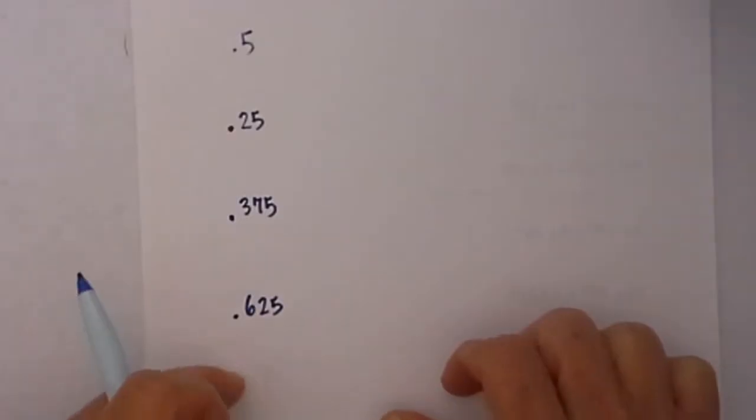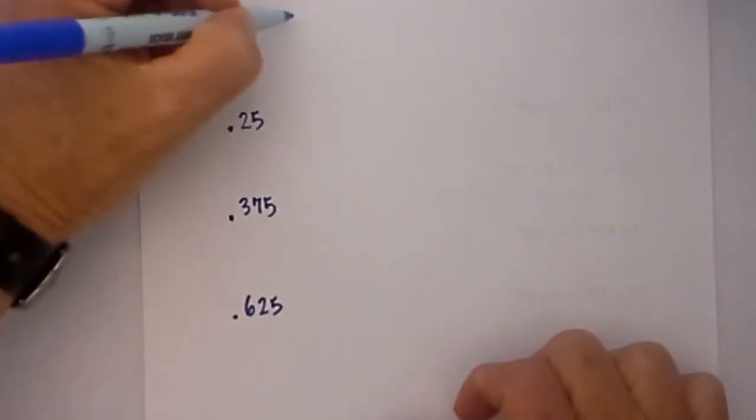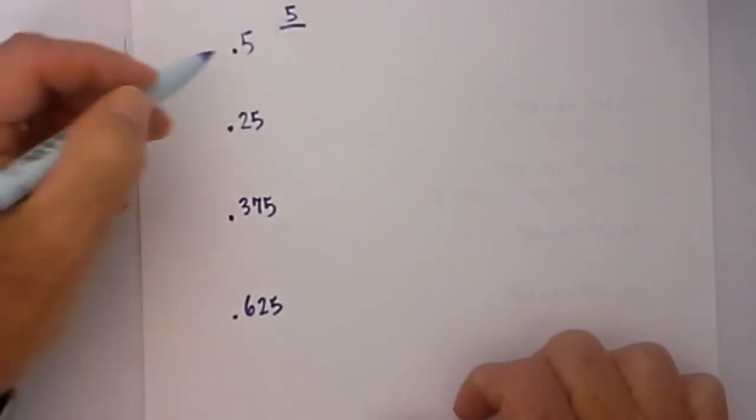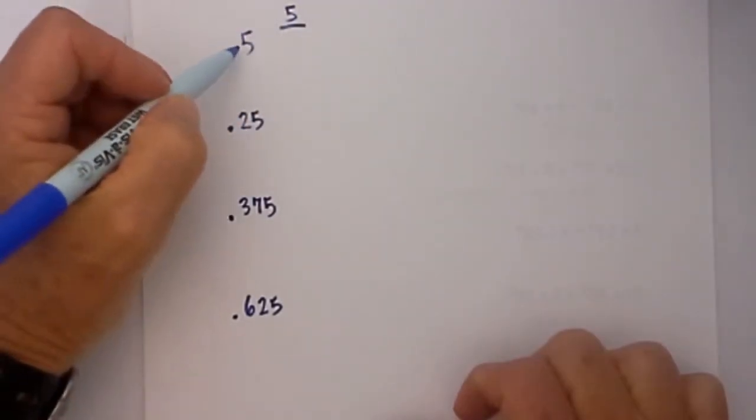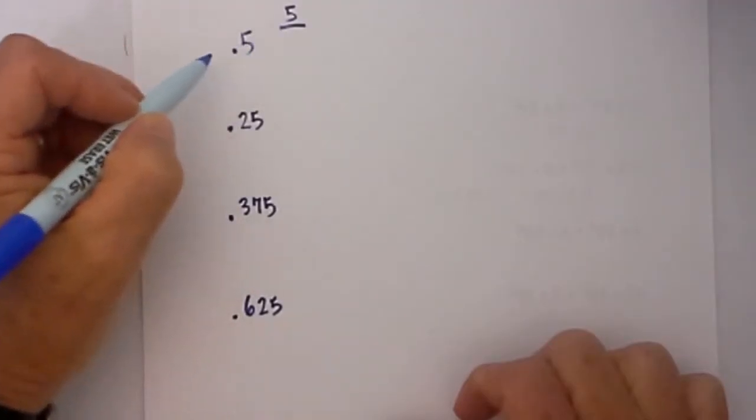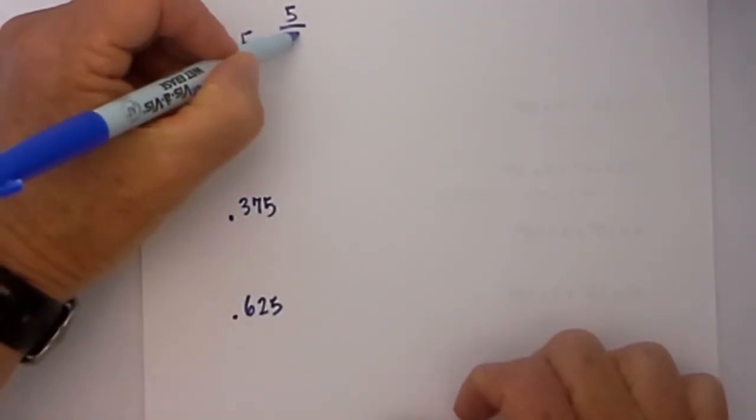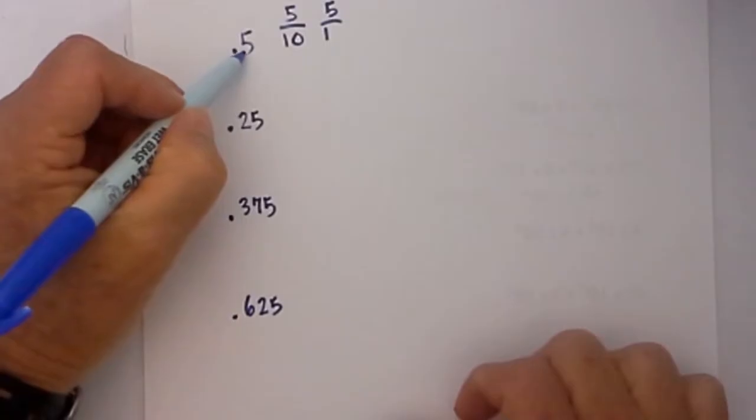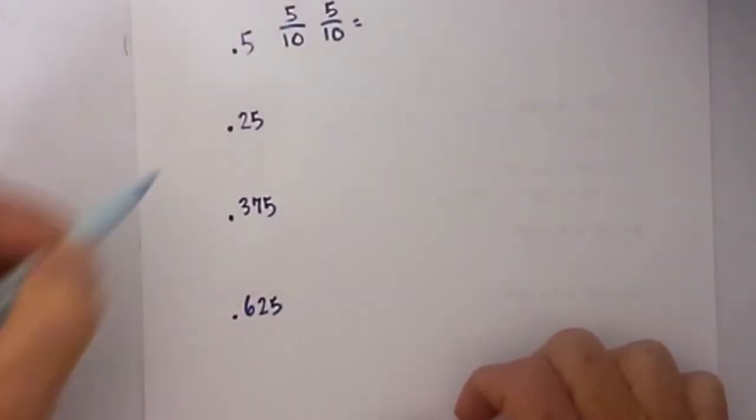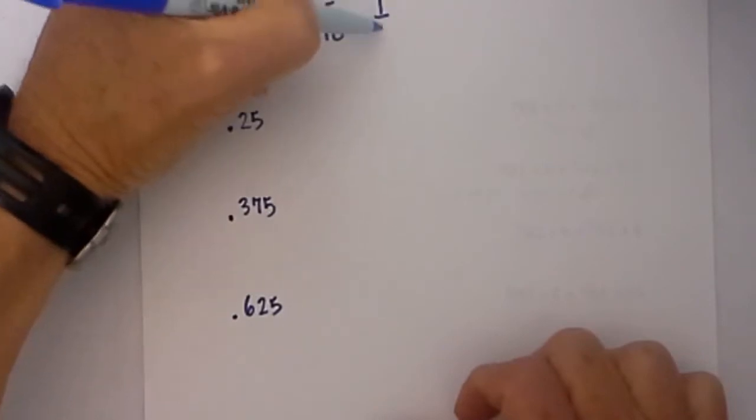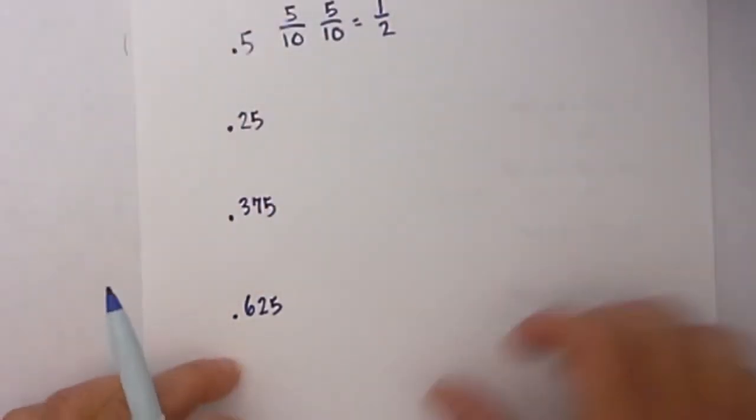Let's work on converting decimals to fractions. Step 1: Create a fraction. I will write the number to the right of the decimal as the numerator. In the denominator you have two options: count the last place value, in this case ten, or write a one and then put the number of zeros to the right of the decimal, which is one. Then we can reduce the fraction. Five goes into ten two times, so 0.5 equals one half.